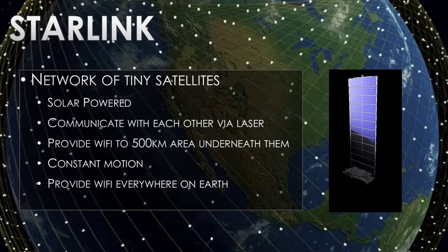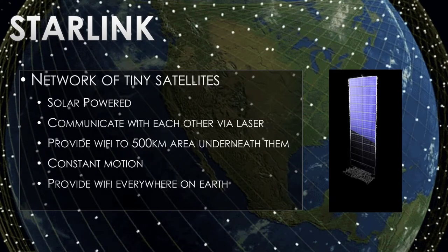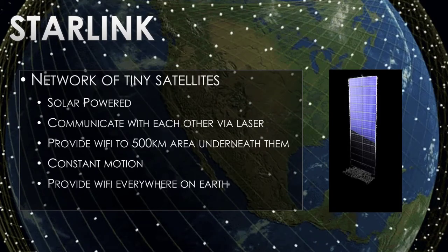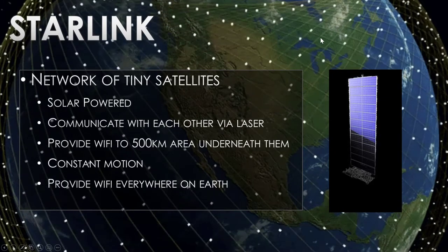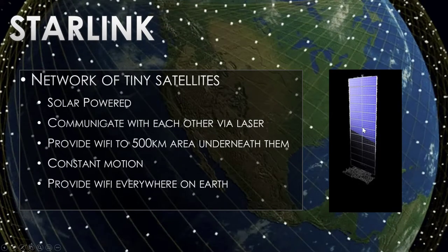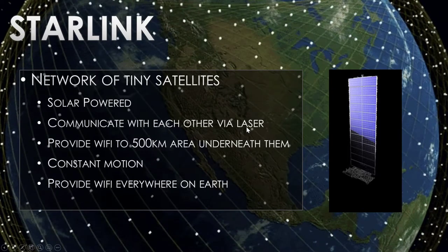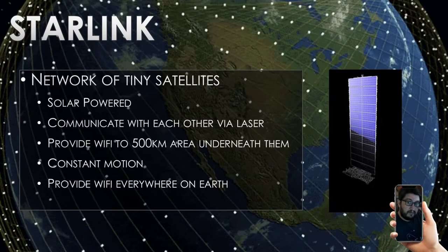Something called Starlink is coming — proposed by SpaceX. They want to put hundreds of satellites in constant coordinated orbit around the planet. The animated GIF in the background is an actual projection of what it'll look like — they don't collide but come near each other. They're small boxes with giant solar panels that fold out once dropped into space, with little gyroscopes to stay on course. They communicate with each other via laser, and they're just above the atmosphere where light travels faster.